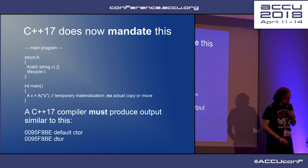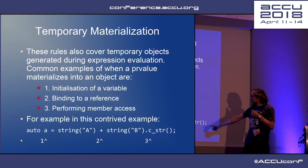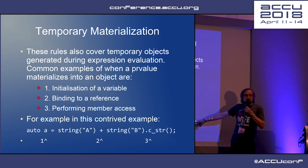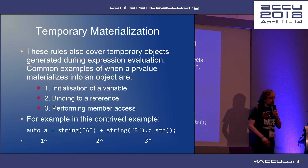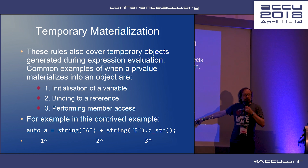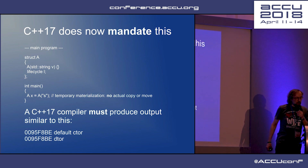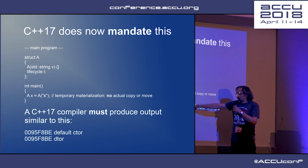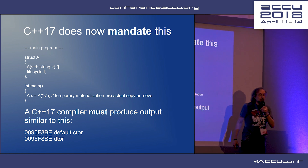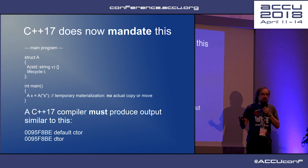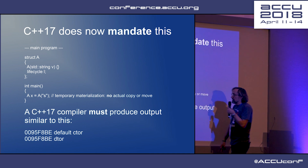And secondly, you don't even need to have a copy constructor or move constructor available — it just isn't used in this case. A C++17 compiler must produce output calling only a default constructor and a destructor for this code. There's no 'may' in there, which is really good news. This changes almost no actual code, but does change people's mindset. And it also means you don't have to have a copy constructor.